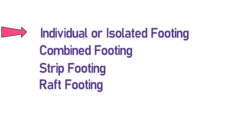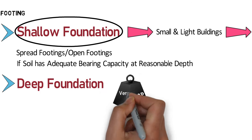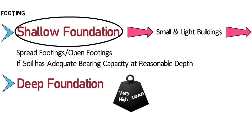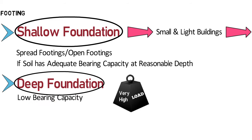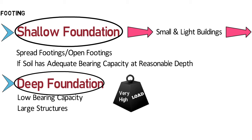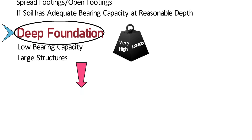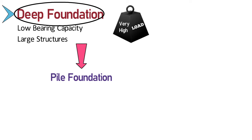For deep foundations, if the load to be supported is very high and the soil is of low bearing capacity, then deep foundations are provided. Deep foundations are used for large structures. There are two main types of deep foundations: 1. Pile foundation, and 2. Caisson foundation.